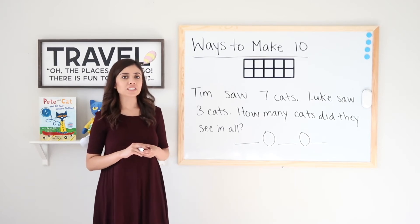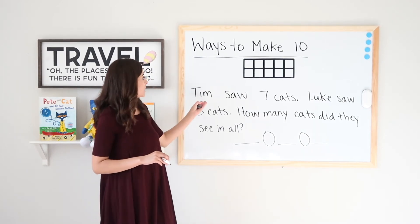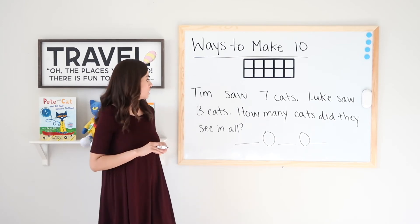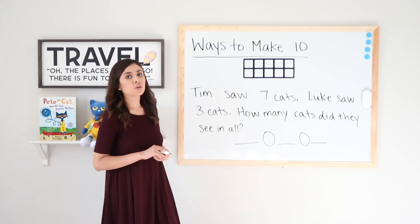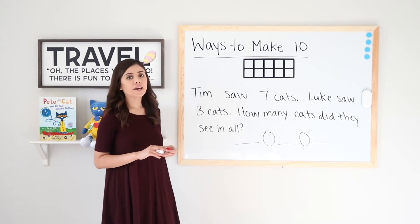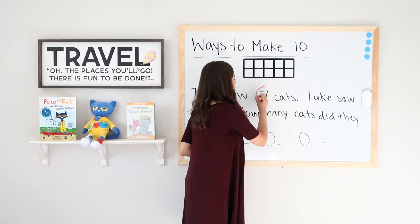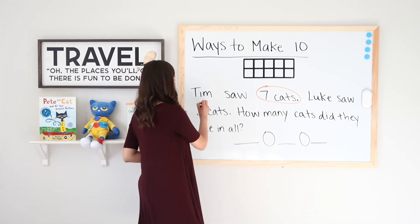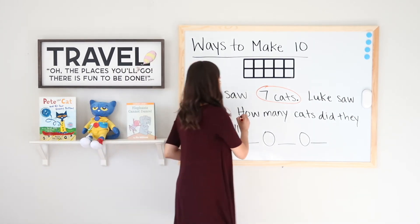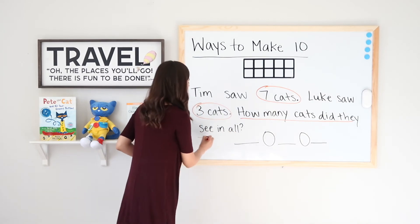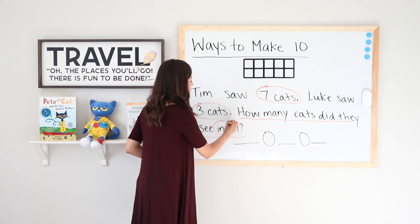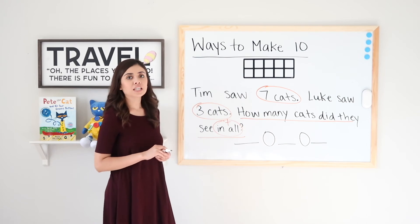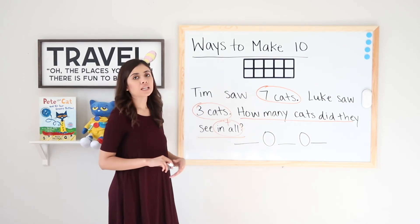Okay, so we are on our last problem for the lesson. This problem says, Tim saw seven cats. Luke saw three cats. How many cats did they see in all? So I will go ahead and circle what I already know. I know that Tim saw how many cats? Seven. Very good. Seven cats. Luke saw how many cats? Three. Very good. Three cats. Now I want to know how many cats did they see in all, and we know that in all means to add.